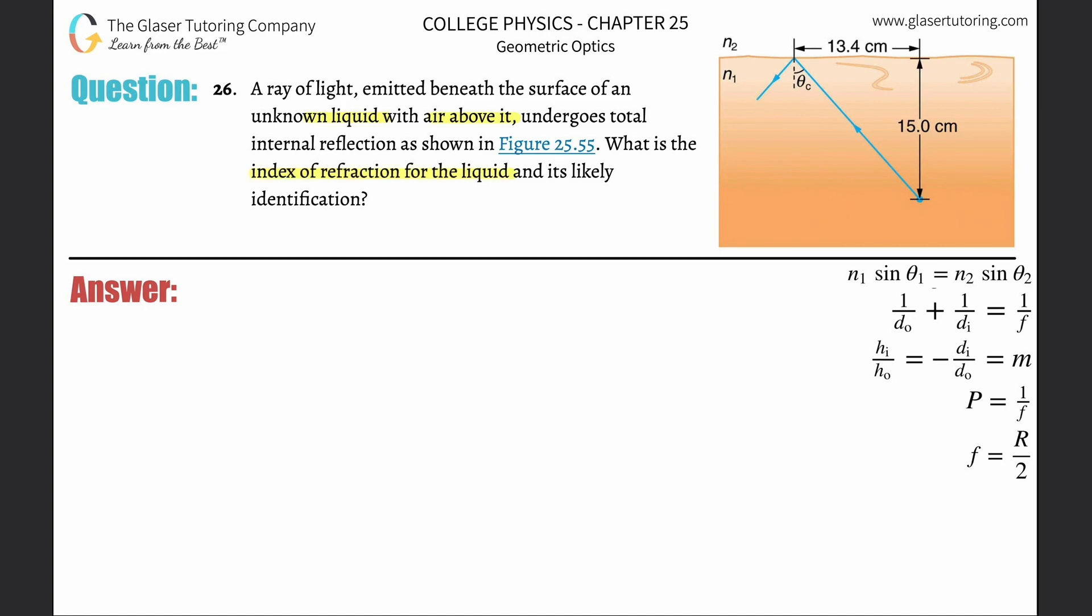Check out number 20 - I went through the idea of how to think through this when they're talking about total internal reflection. Number 25 might come in handy as well. Let's use the formula for critical angle, which was developed in number 20: sine of critical angle equals n2 over n1.